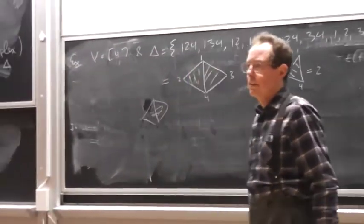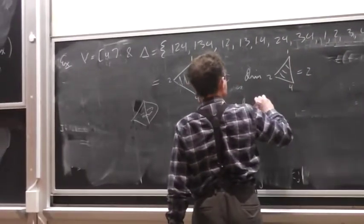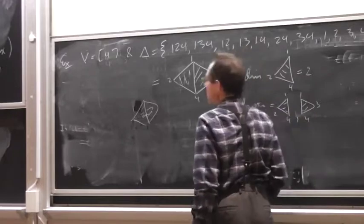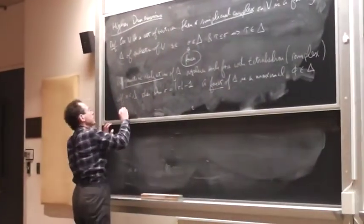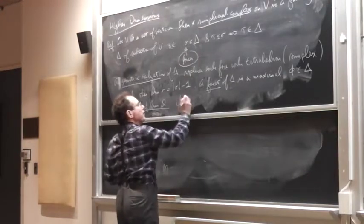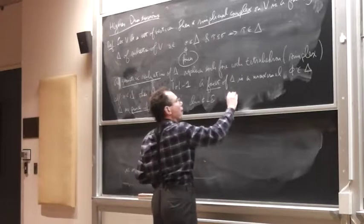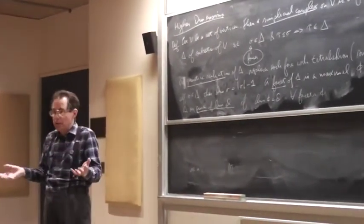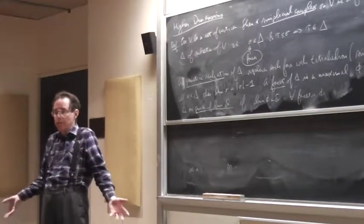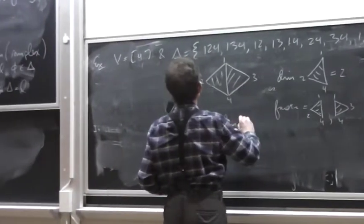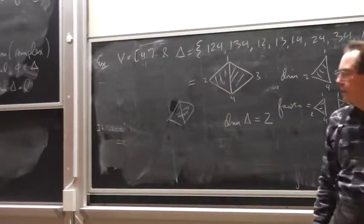The facet of delta is a maximum sigma x. Okay. So what are the facets here? One, two, four, one, three. Exactly. The two triangles. So if we get the facets are two, four, and one, three, four. And then we'll say that delta is pure of dimension D if the dimension of phi is D for all facets. So there's nothing that says that just because a face is maximal that it has maximum dimension. Right? If all the maximal things all have maximum dimension, then it's pure. This is clearly... And we write this as dim of the simplicial complex is not. So this thing has dimension.